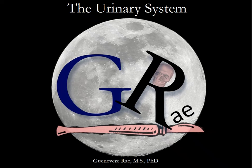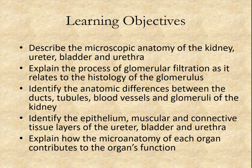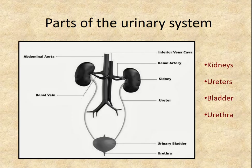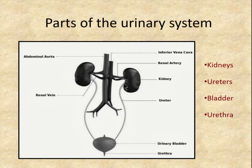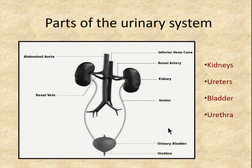Hope everyone had a happy Mardi Gras and now we've got to get back to courses. The first system we're doing in the histology course is the urinary system. As a reminder of the gross parts: we have bilateral kidneys found in the posterior abdominal area, retroperitoneal. Each kidney has a ureter that brings urine inferiorly to the urinary bladder, which empties to the outside through the urethra.